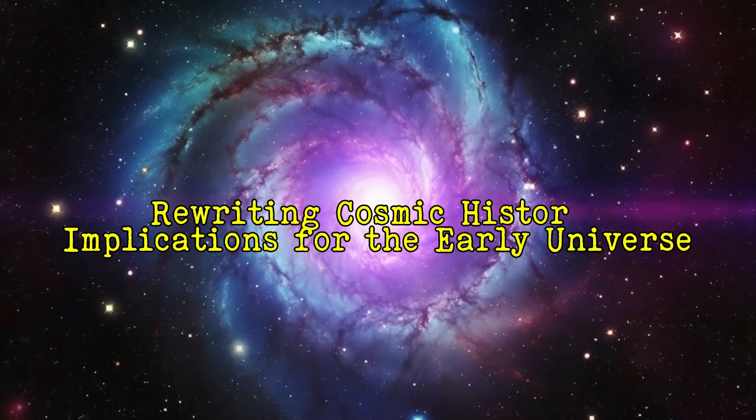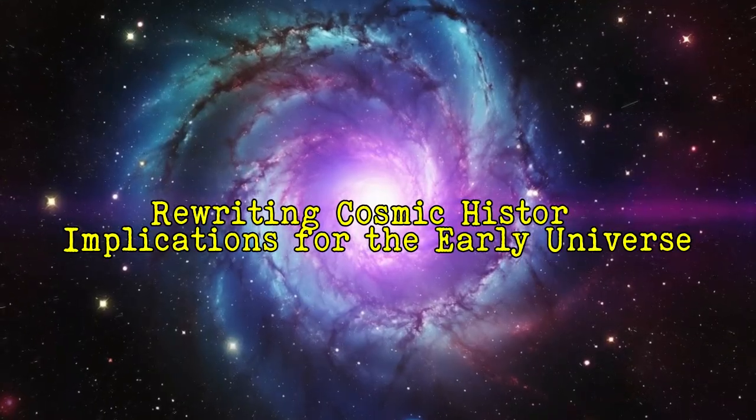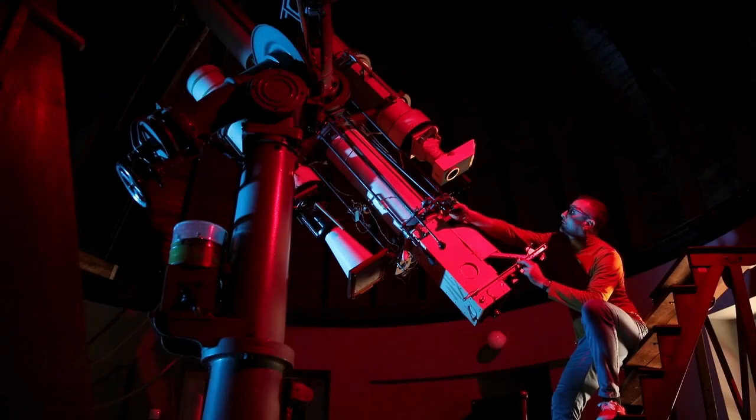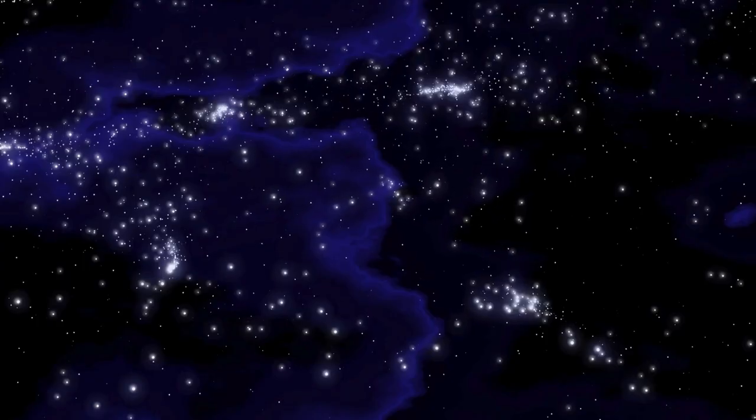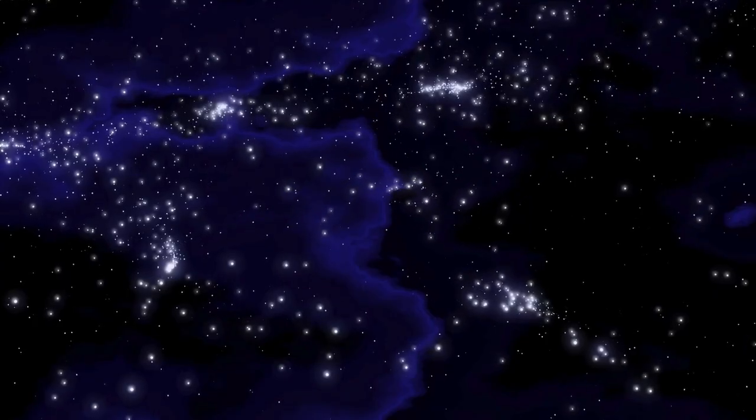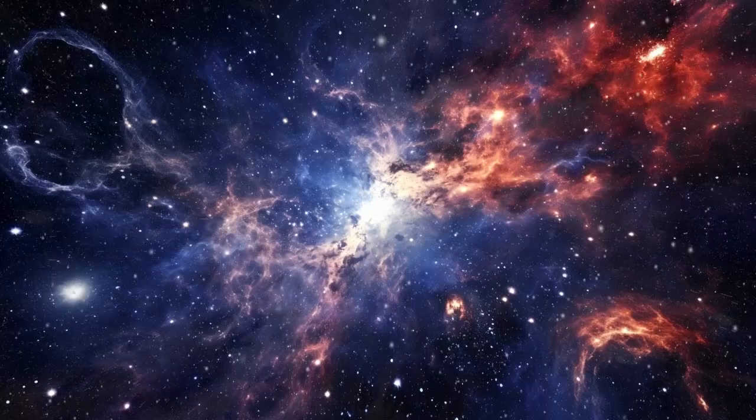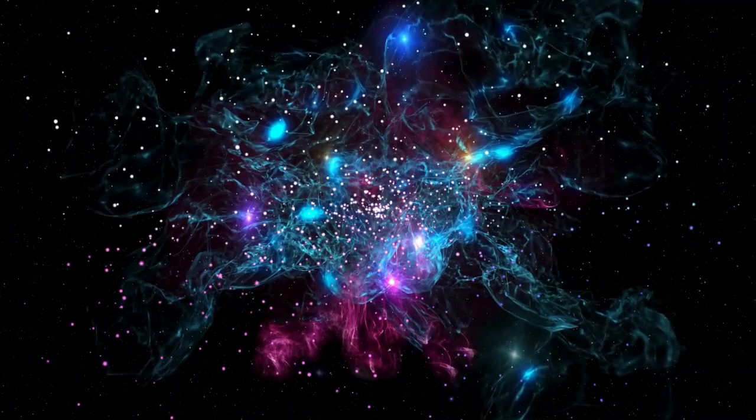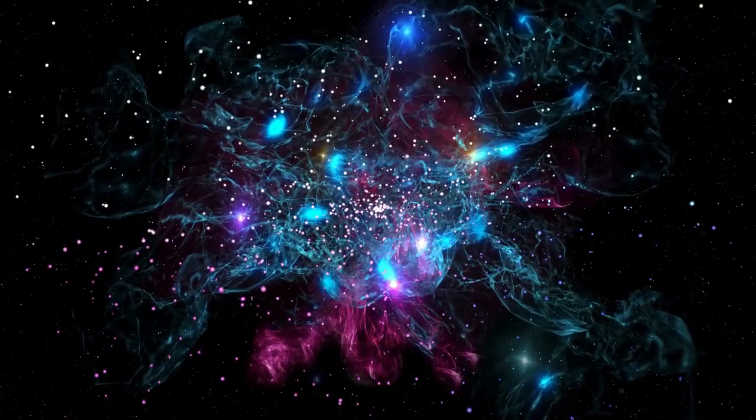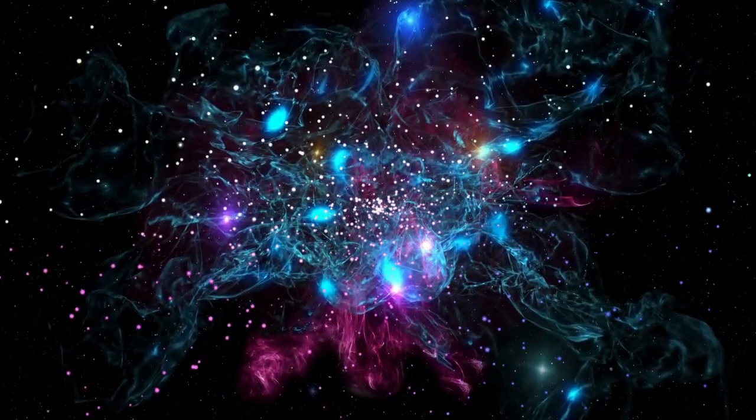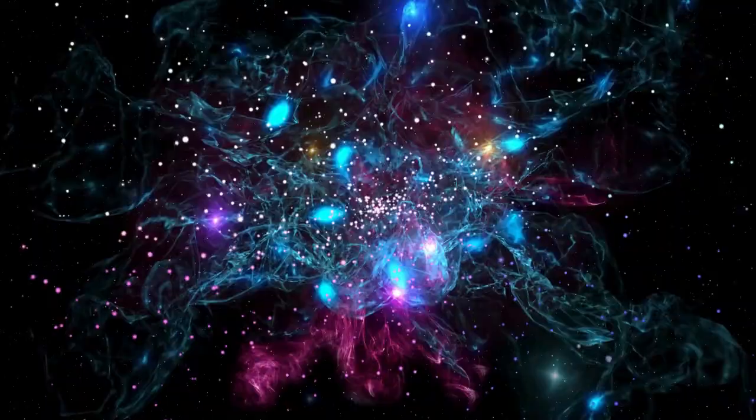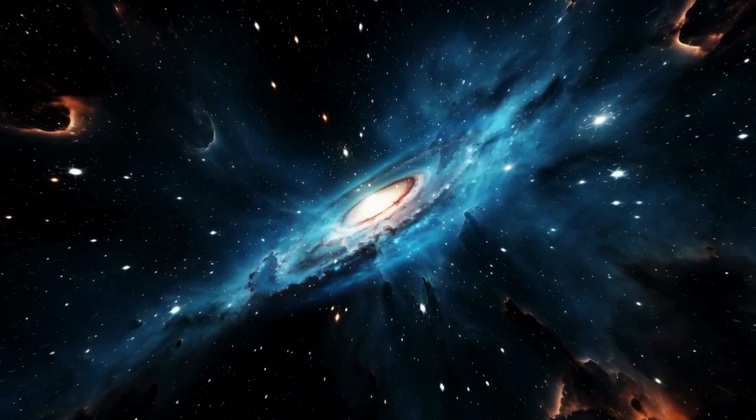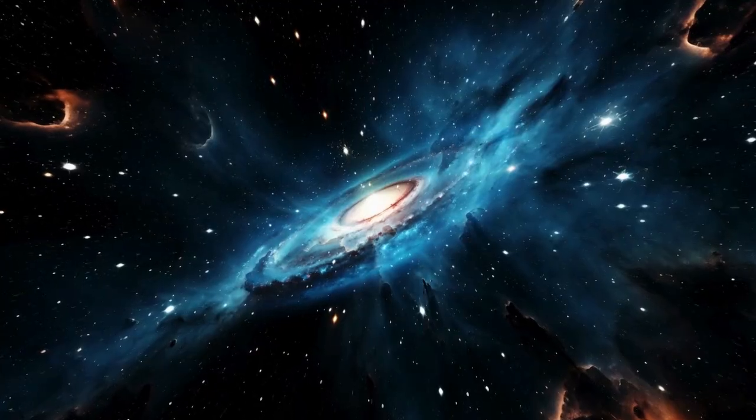Until recently, astronomers believed the first billion years after the Big Bang unfolded as a slow, methodical process. The narrative went like this: first came darkness, then the first stars gradually ignited, followed by the slow assembly of galaxies over hundreds of millions of years. The early universe was considered relatively simple, with complex structures taking considerable time to emerge.